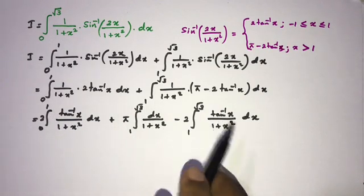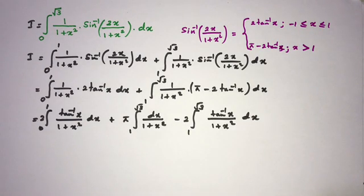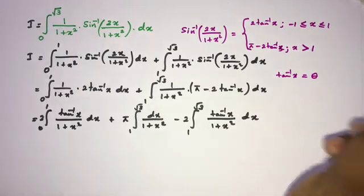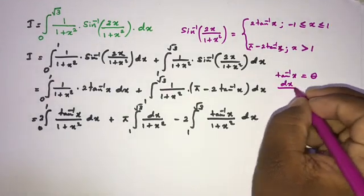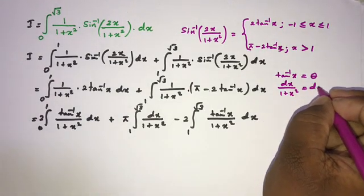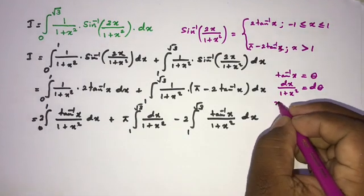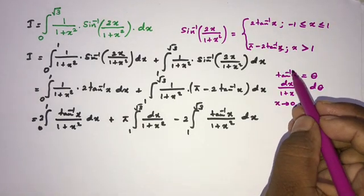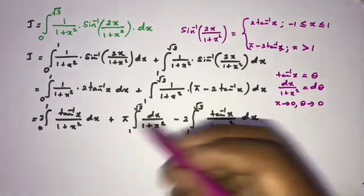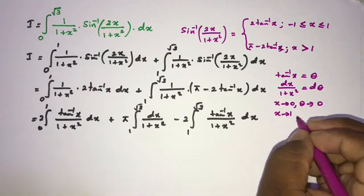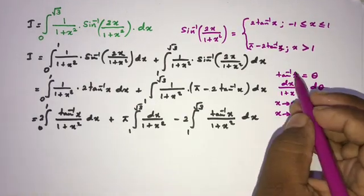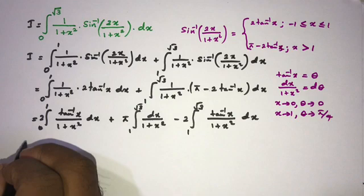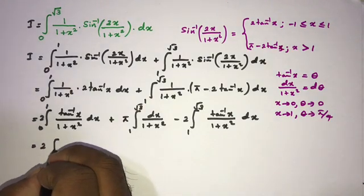To evaluate these integrals, we use the substitution: let inverse tan of x equal theta. Differentiating gives dx over (1 plus x squared) equals d theta. For the lower limit, when x approaches 0, theta approaches inverse tan of 0, which is 0. For the upper limit, when x approaches 1, theta approaches inverse tan of 1, which is pi over 4.